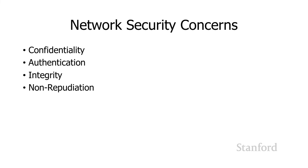Let's go back to our list of network concerns. Confidentiality — we've seen that both symmetric and asymmetric encryption takes care of that. Authentication — we've just seen that with the certification authorities, which use public key / private key to provide certificates guaranteeing that a website is who they say they are. Non-repudiation — we saw that public key / private key can be used to set up a system where people cannot repudiate actions they've taken. And that leaves integrity, which we haven't talked about yet.